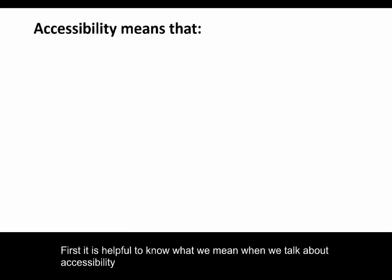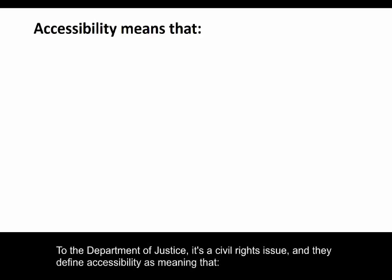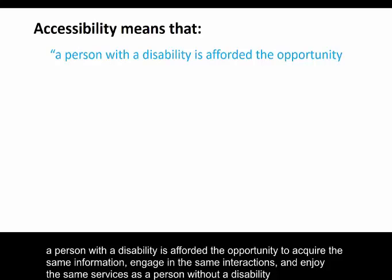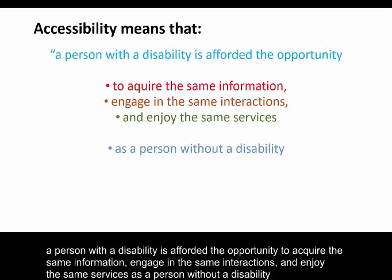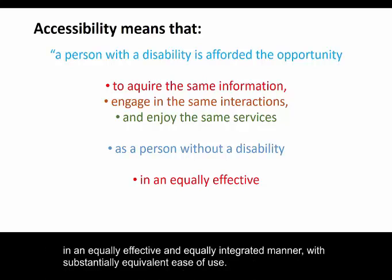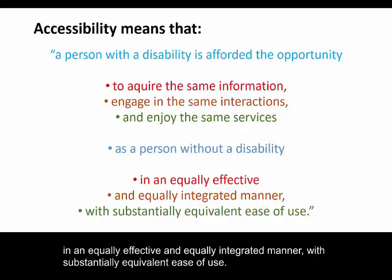First, it is helpful to know what we mean when we talk about accessibility. To the Department of Justice, it's a civil rights issue, and they define accessibility as meaning that a person with a disability is afforded the opportunity to acquire the same information, engage in the same interactions, and enjoy the same services as a person without a disability, in an equally effective and equally integrated manner, with substantially equivalent ease of use.